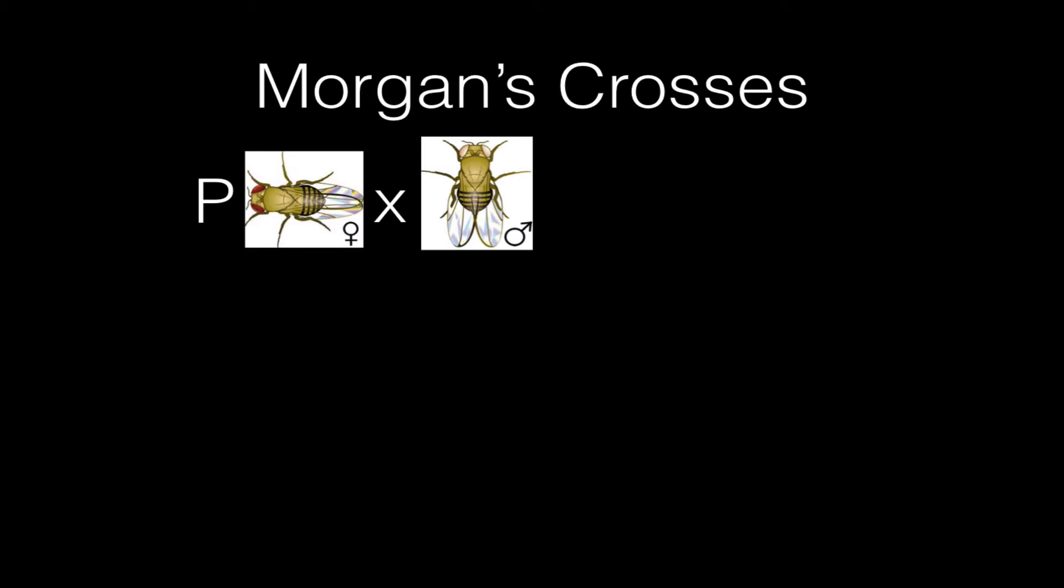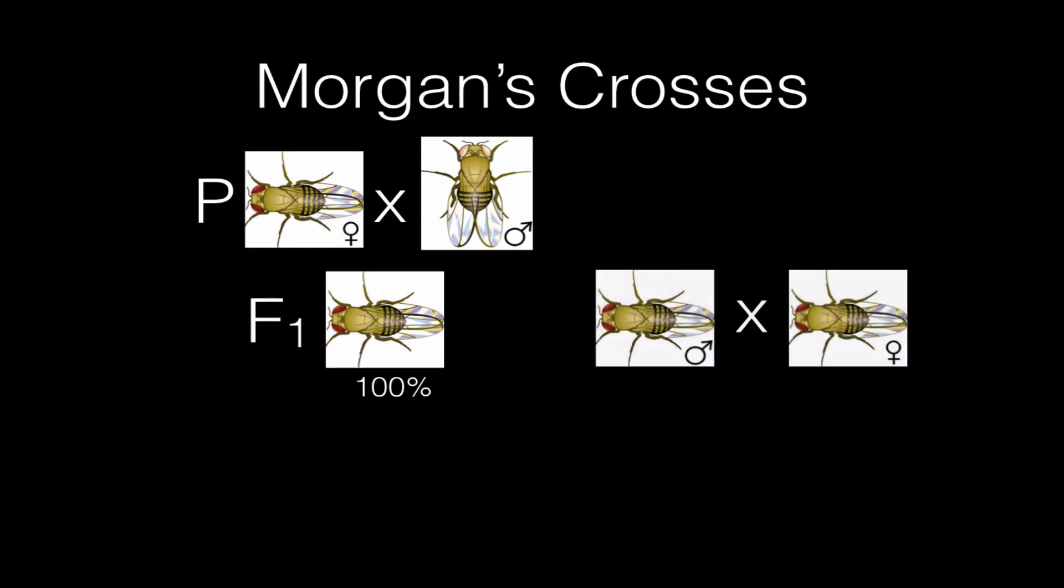So here's his P cross, or his parental cross. He's going to cross a female with wild-type eyes to the white-eyed male mutant. And what he got out of that was an F1 generation that was 100% red eyes. So far, so good. So from this cross, it looks like the wild-type eye color is the dominant color, and the white-eye mutation is recessive, kind of like what we saw in Mendelian genetics.